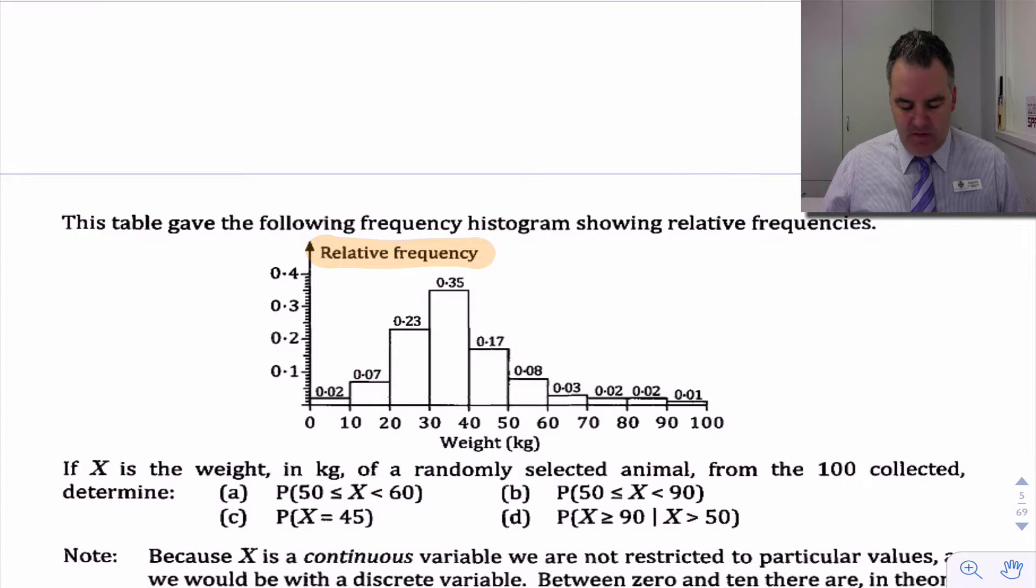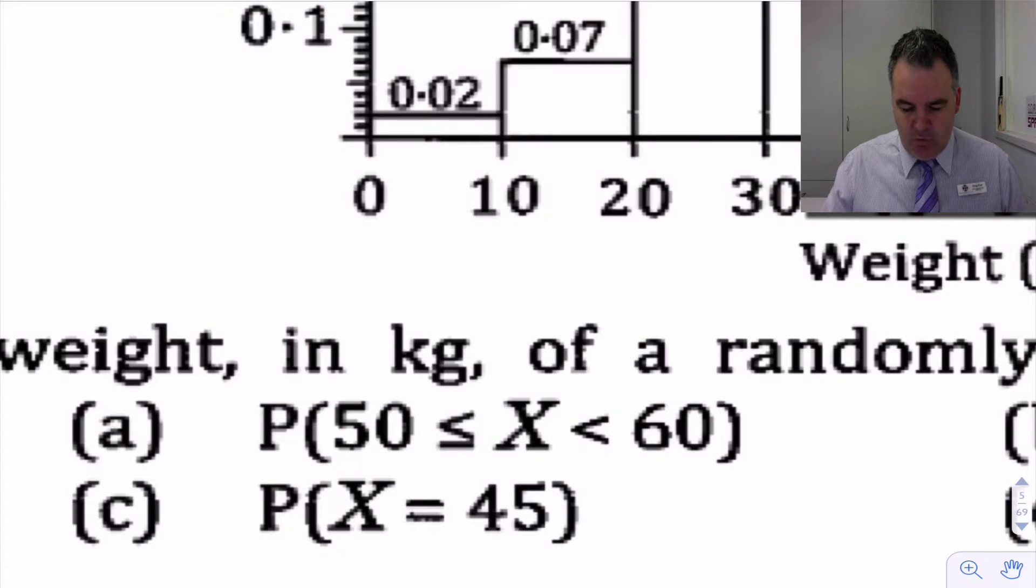So the question here says, what's the probability that if x is the weight in kilos of a randomly selected animal from the 100 collected, determine the probability that x was between 50 and 60? Now it's really important here for me to just make a note of these two. Because there is theoretically infinitely many weights between 50 and 60, it really doesn't matter if we say x is greater than or equal to 50 or just greater than 50. Because the probability of being any one particular weight in that interval between zero and 100 is zero.